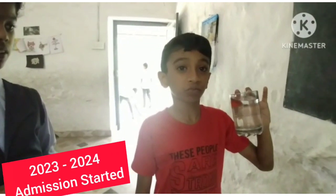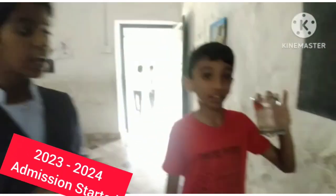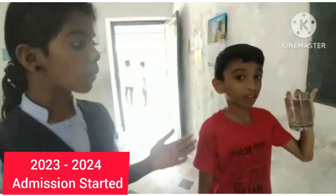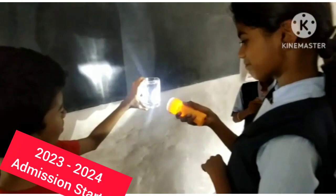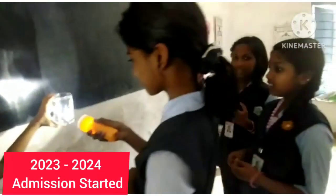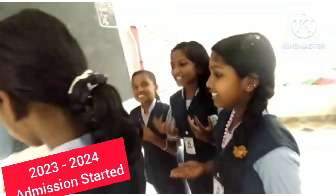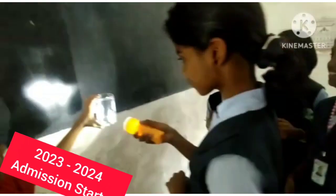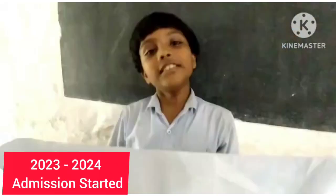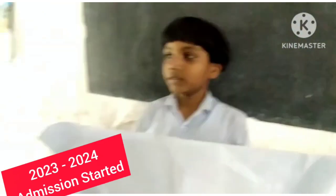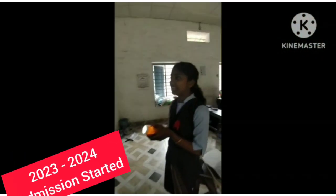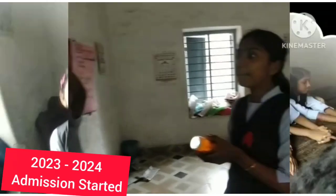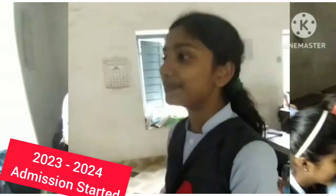A glass of water. Can light pass through this water? Yes, light passes through the water. Charred paper — can light pass through this charred paper? Charred paper partially transmits light.